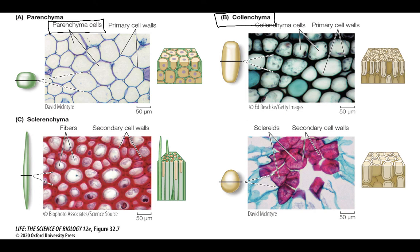Another way of thinking about colenchyma is that if you've ever had a plant that you forgot to water and it wilted, what you would find at the cellular level is that the parts that are wilting are the parenchyma and colenchyma cells. Colenchyma cells are also what you notice if you've ever eaten celery — that stringy tissue is mostly colenchyma cells. It's flexible, but still kind of tough.